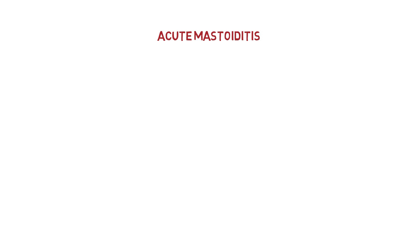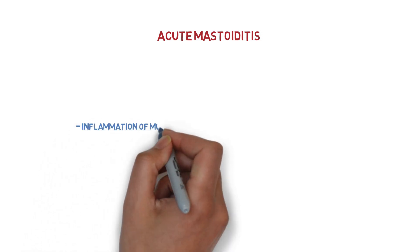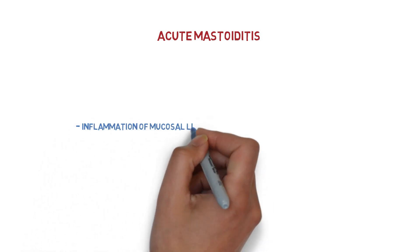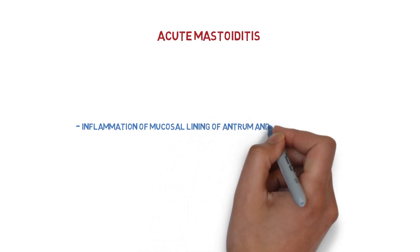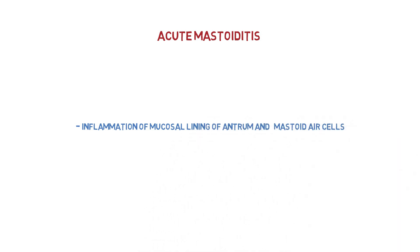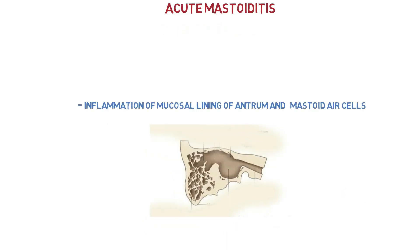Mastoiditis is the inflammation of the mucosal lining of the antrum and mastoid air cell systems. The term mastoiditis is used when infection spreads from the mucosa lining the mastoid air cells to involve the bony walls of the mastoid air cell systems.